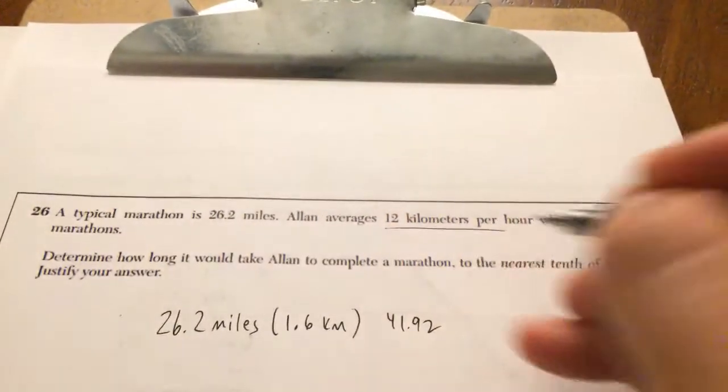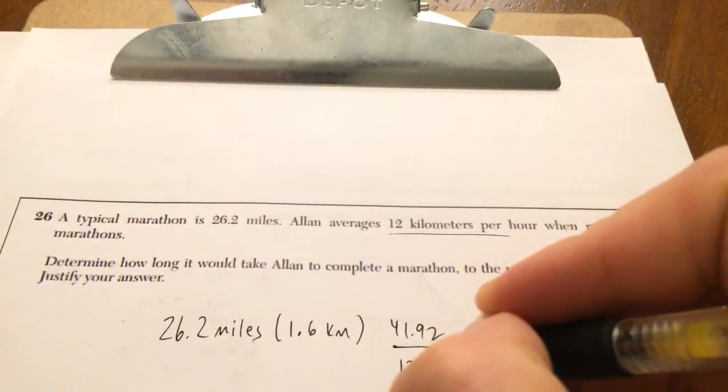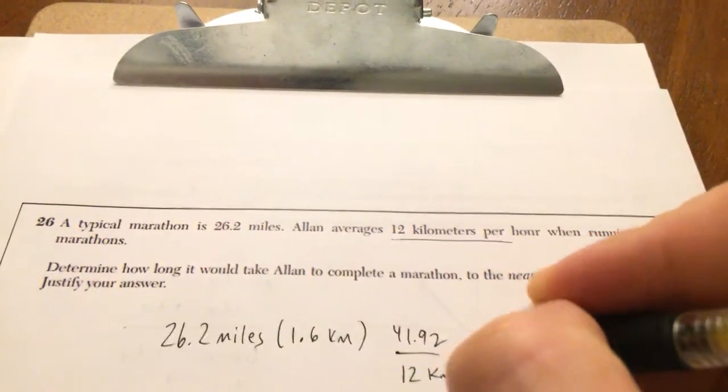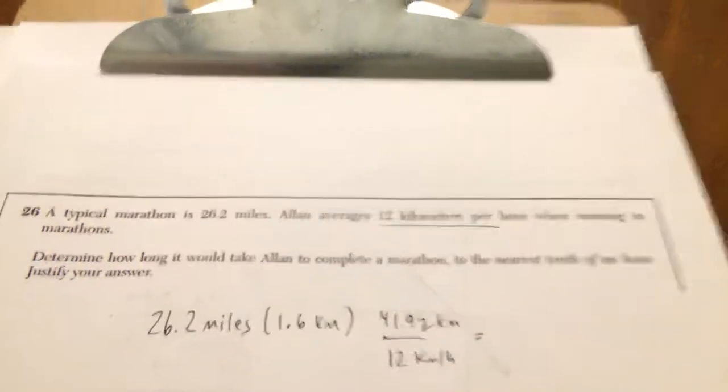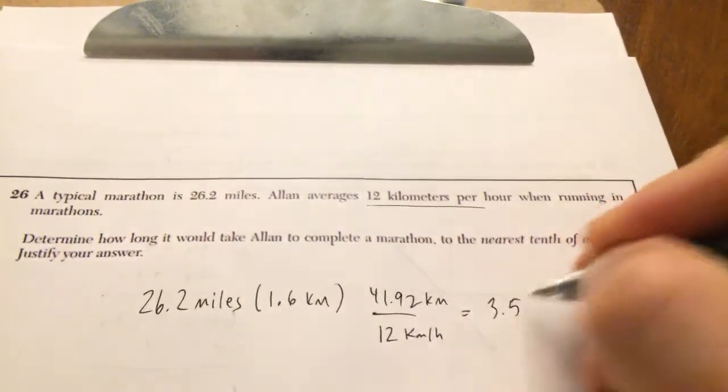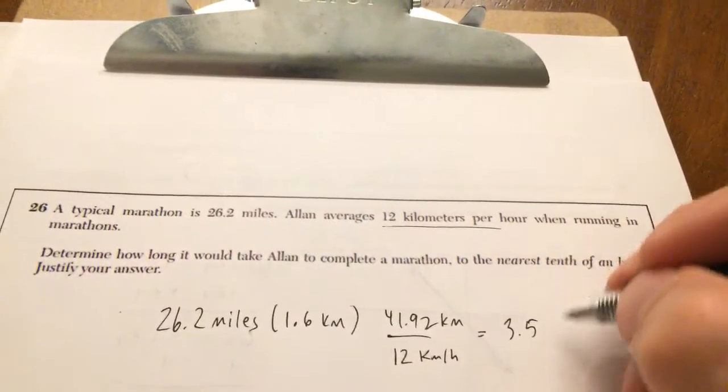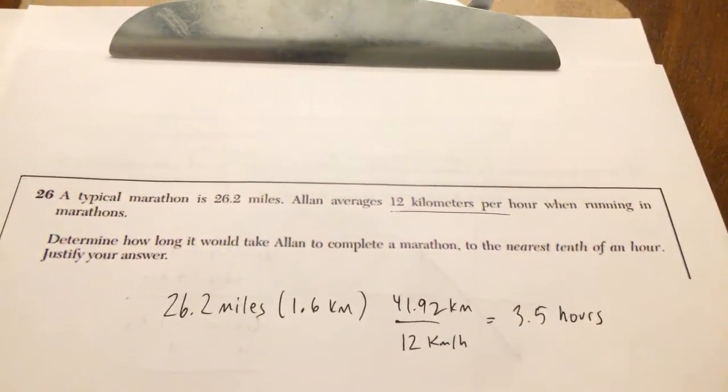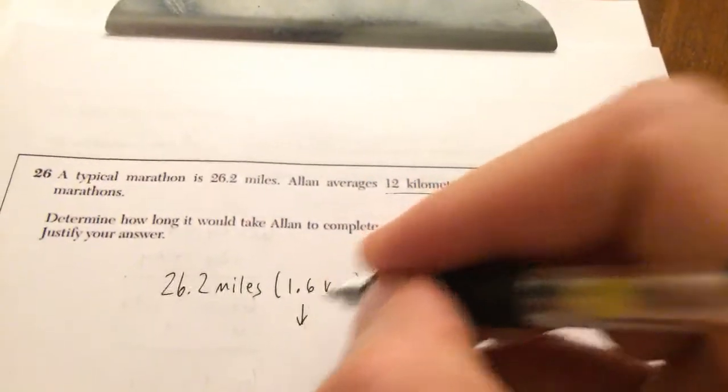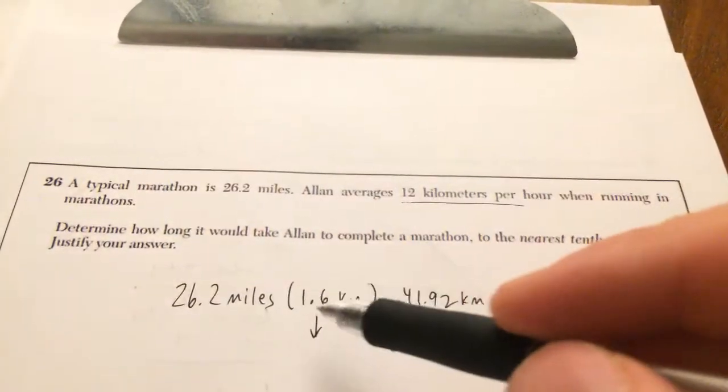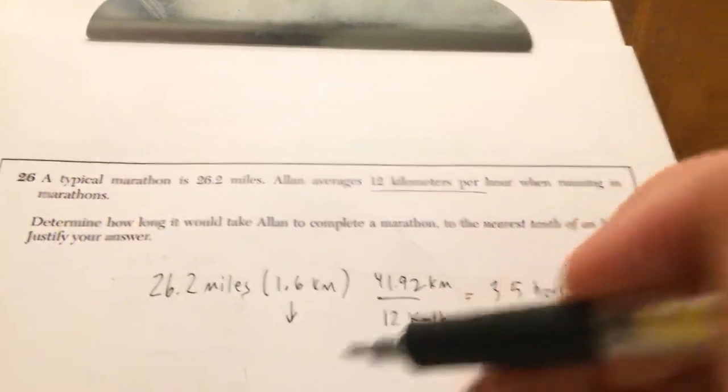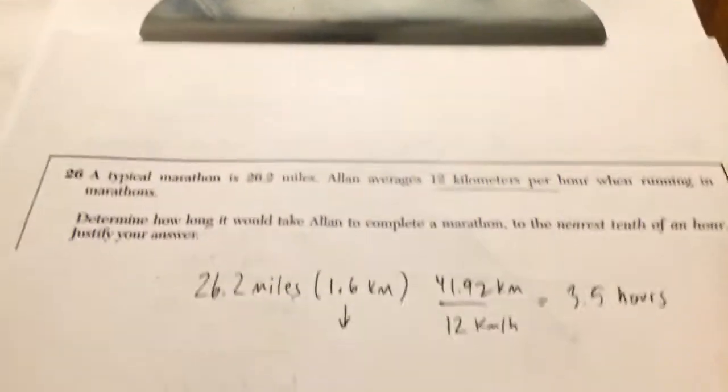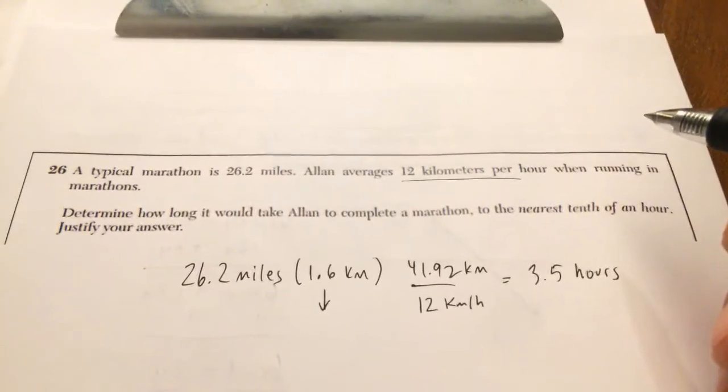So now if we're running 12 kilometers per hour, well, how many hours is that? Okay, I get about 3.5 hours. I rounded to the nearest tenth, I believe, in the book on the reference sheet. It's maybe thousandths place. Use the more accurate decimal. Don't use 1.6.